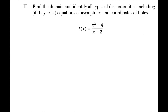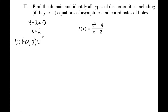For example two, find the domain and identify all types of discontinuities, including equations of asymptotes and coordinates of holes. The denominator equals zero when x equals 2, so the domain excludes 2: negative infinity to 2 and 2 to infinity. Factoring the numerator gives (x+2)(x-2), with denominator (x-2).